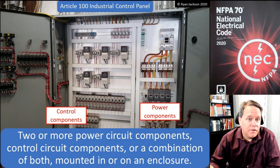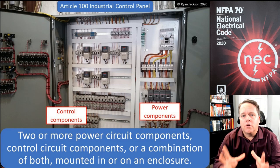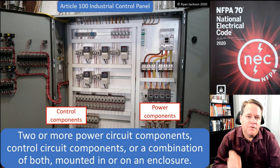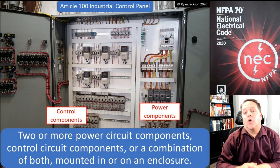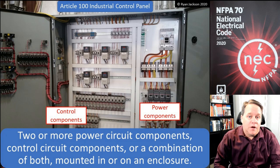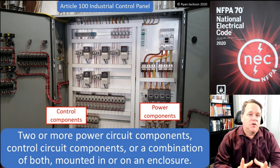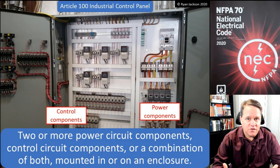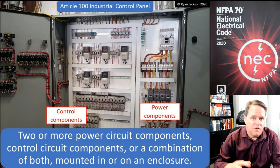We need requirements and provisions on how to do that, so Article 409 was added. This angers a lot of people when I tell them this, but it's the truth: industrial control panels do not have to be listed. If they had to be listed, Article 409 would consist of one sentence — it would just say 'industrial control panels shall be listed.' Article 409 is there to give the electrician the tools needed to create this without having to have it listed, because a lot of times it's just control components.